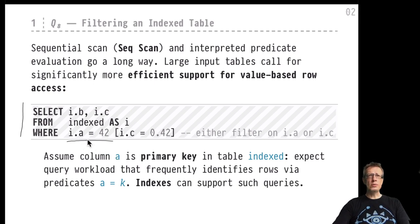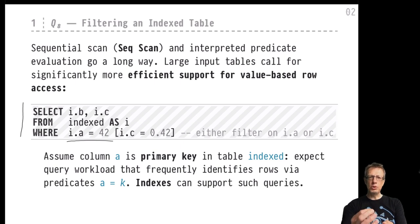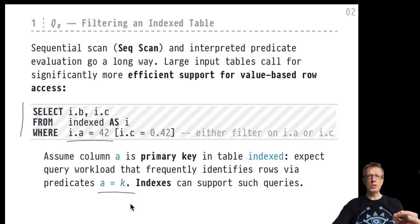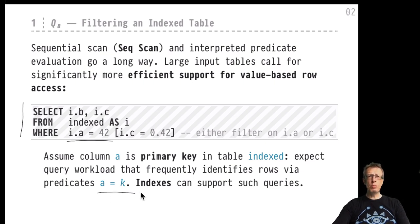If we assume that column i.a is a primary key, users use column a to identify rows in table 'indexed'. Who knows how many rows will be in table 'indexed' - millions maybe - but column a will be unique and used to identify individual rows. The system can expect a query workload often containing predicates like this, and we better have efficient support in the database system for this type of particular predicate.